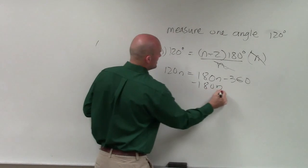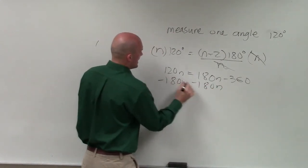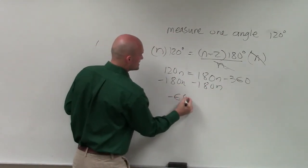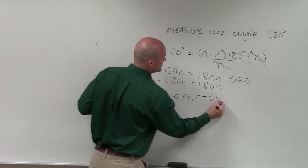Then I'll subtract 180n from both sides. Therefore, I get -60n equals -360.